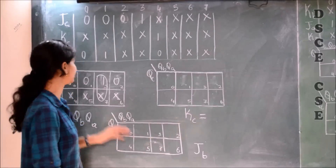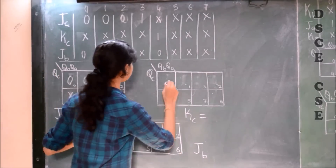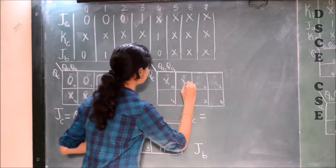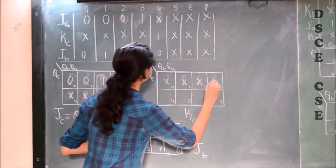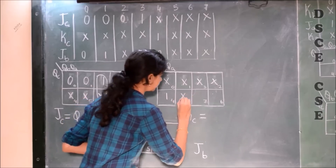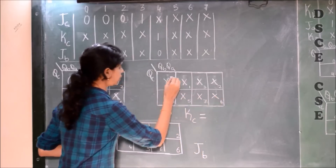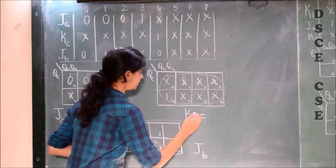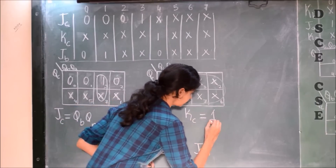Now let us draw the K-map for KC. The values are don't care, don't care, don't care, don't care, don't care, 1, and remaining don't cares. Thus we get a quad form, hence an octet form. So the value of KC becomes 1, which is high.